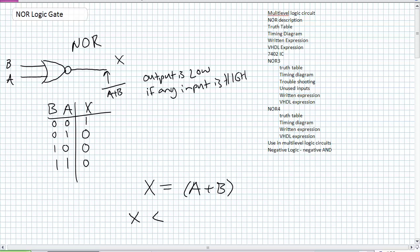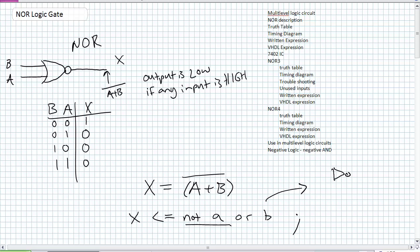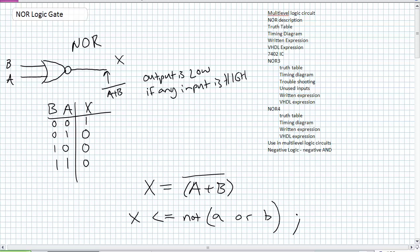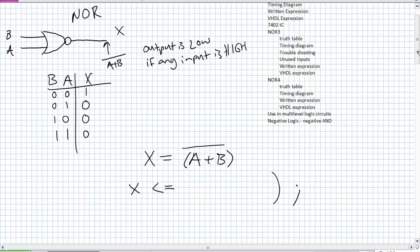In VHDL: X is assigned NOT (A OR B), semicolon — the parentheses are absolutely key. Without parentheses, writing 'not A or B' takes only NOT A, then ORs with B, which is not what we want. We want NOT of the entire (A OR B). And since the NOR gate is so commonly used, VHDL actually has a keyword for it: you can write A NOR B. Whichever you choose.